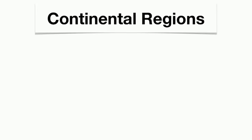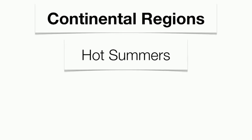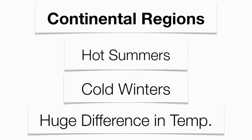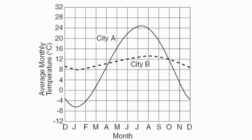Continental or inland regions, because land heats up so quickly, have really hot summers, and because land cools off very quickly, have very cold winters. There is a very big difference between summertime and wintertime temperatures inland. Looking at a graph comparing two cities — city A is the solid line and city B is the dotted line — city A has a huge difference between average winter and summer temperatures, meaning it must be more inland. City B is much more moderated, meaning it must be closer to the water.